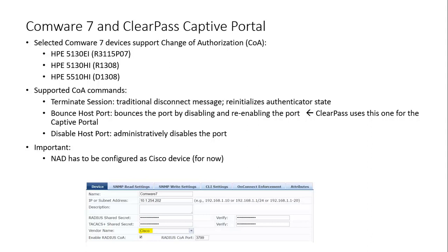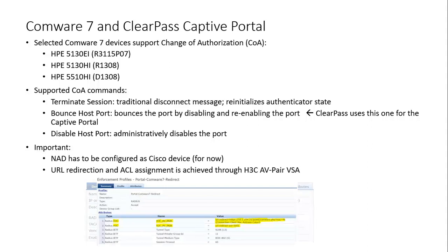For the URL redirection, we have to use a specific RADIUS VSA from H3C, which is called the AV pair. This VSA can push the redirection URL and the ACL that is required to allow the DHCP, DNS, and web portal traffic.